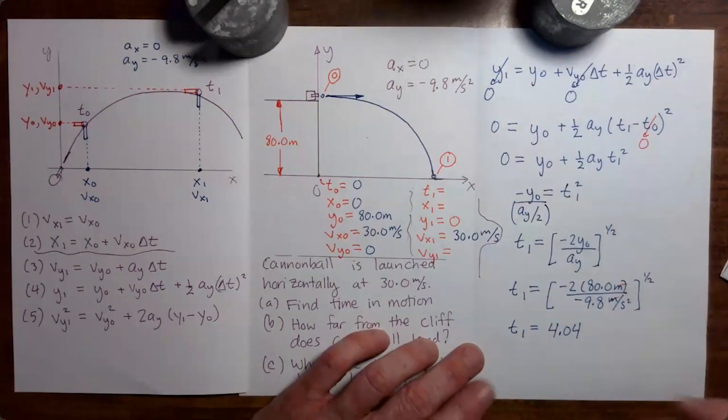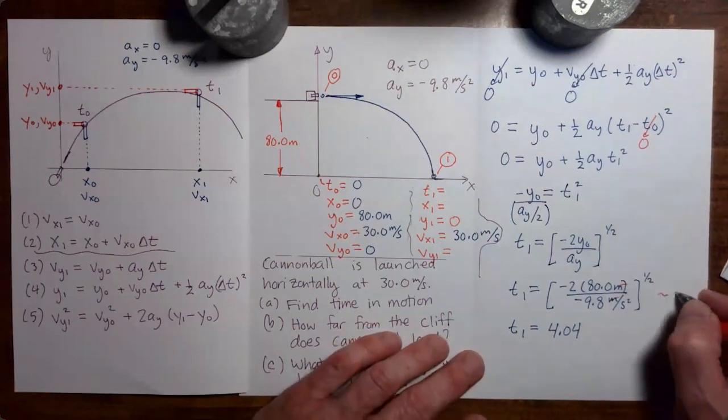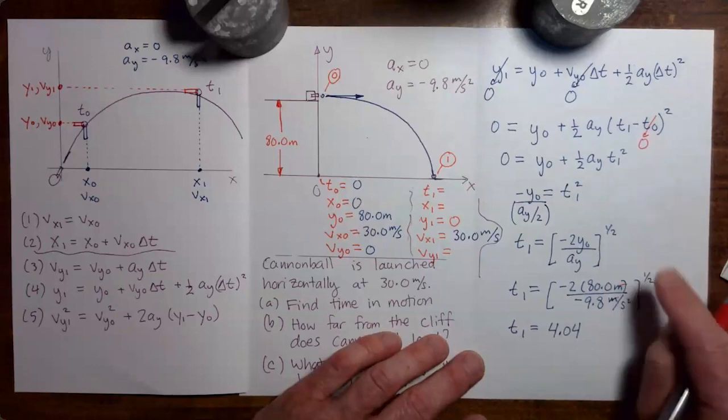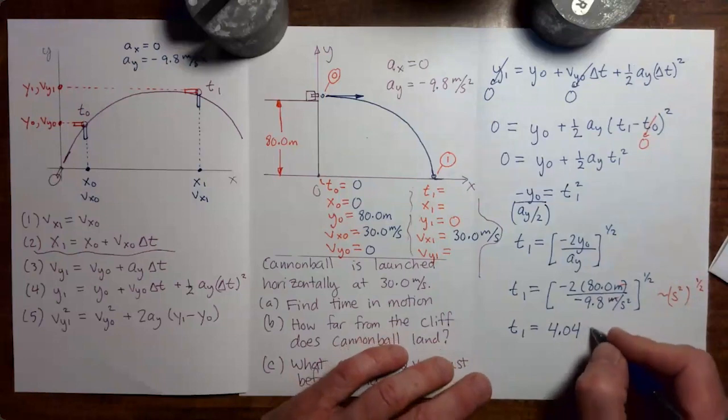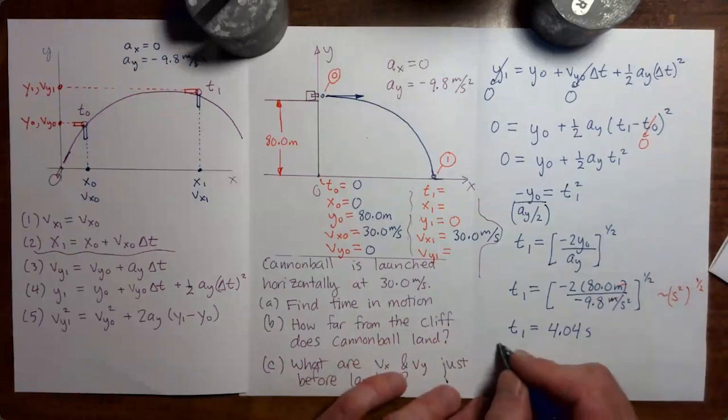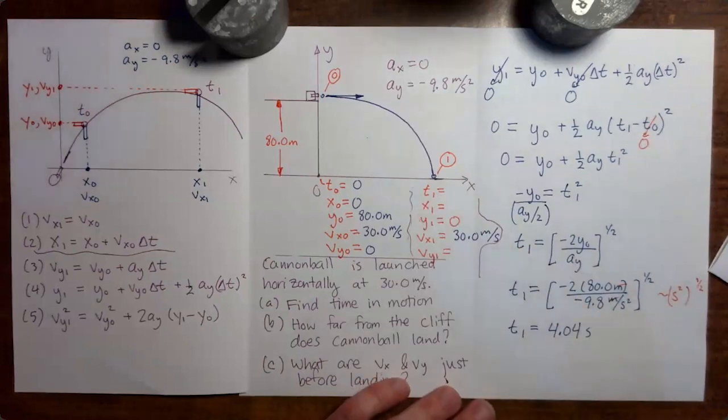Now notice that we have inside the parentheses one over seconds squared. Now that's going to flip up into the numerator so that we have seconds squared, but then we're taking the square root of that. So the unit is seconds. Okay, so this is the answer to the first part of the problem. The time in motion is 4.04 seconds.